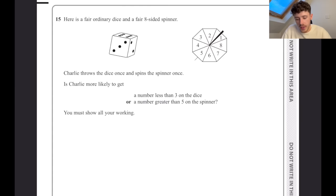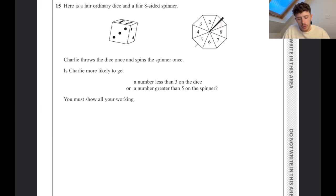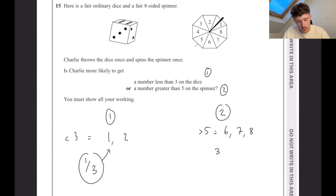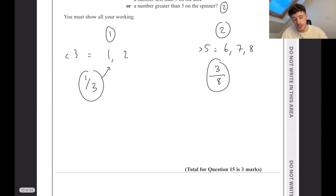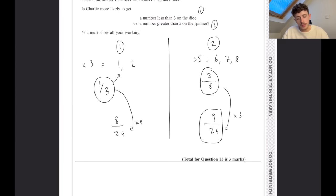Here is a fair ordinary dice and a fair eight-sided spinner. Charlie throws the dice once and spins the spinner once. Is Charlie more likely to get a number less than three on the dice or a number greater than five on the spinner? Let's call this situation one and situation two. A number less than three is going to be one or two - the chance of getting that is one out of three. For situation two, a number greater than five on the spinner is going to be six, seven, or eight, which is three out of eight. Now we need to see which of those fractions is bigger. The best common denominator here will be 24. So that's eight out of 24 for situation one and nine out of 24 for situation two. So the right hand side is actually more likely. You would write a sentence that says a number greater than five on the spinner is more likely.